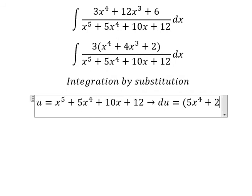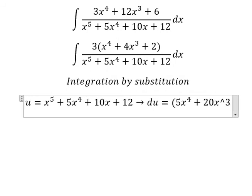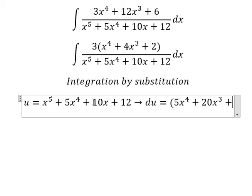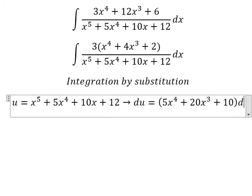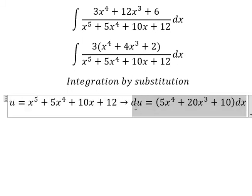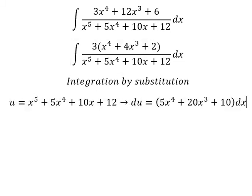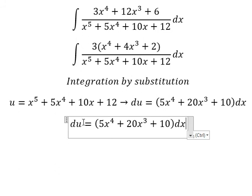Next we divide both sides by number five, so du/5 equals (x^4 + 4x^3 + 2)dx.